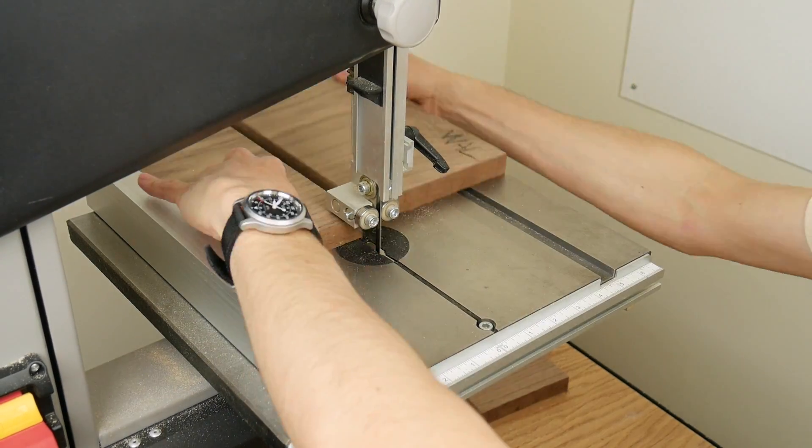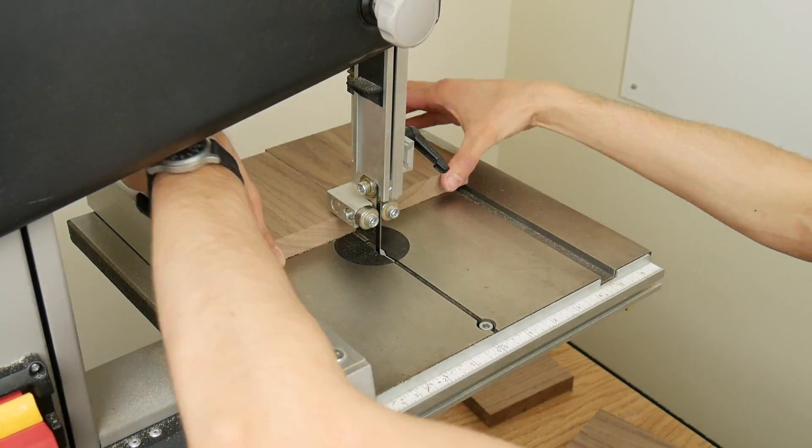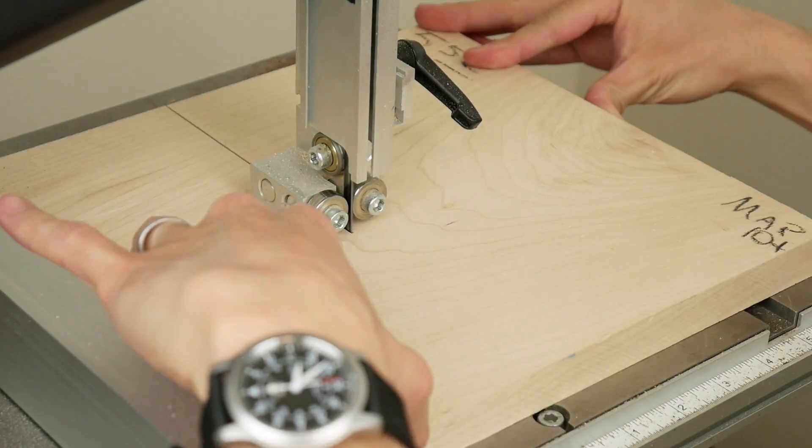I started by cutting a slab of walnut into 5-inch squares and I did the same for a slab of maple.